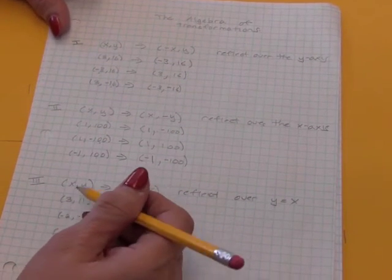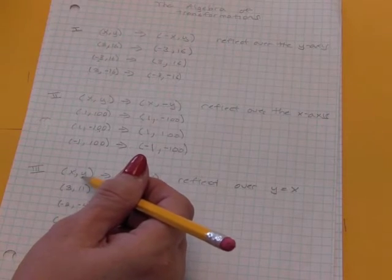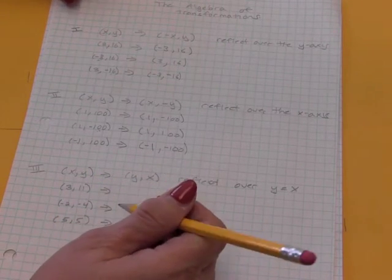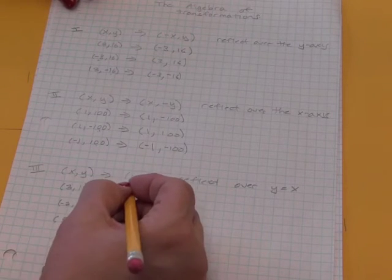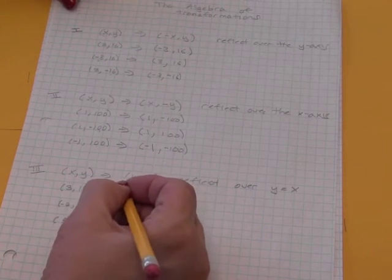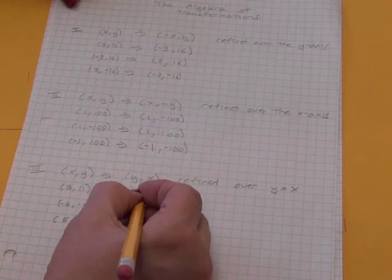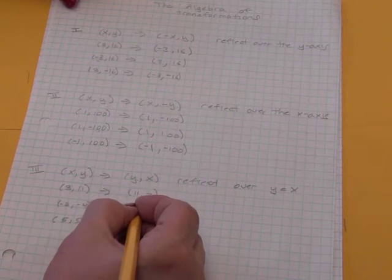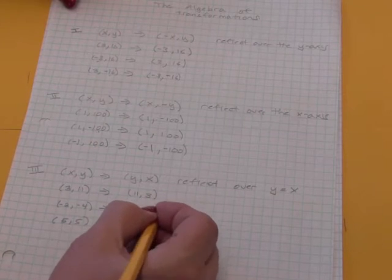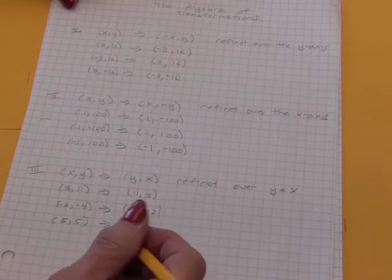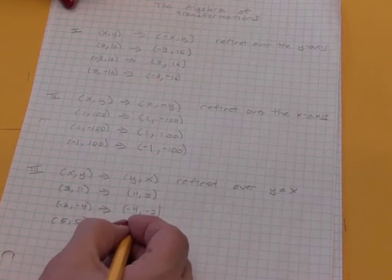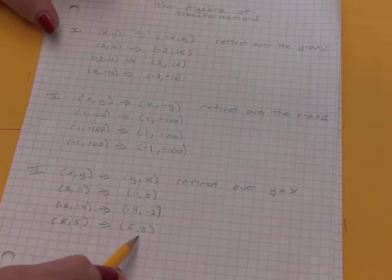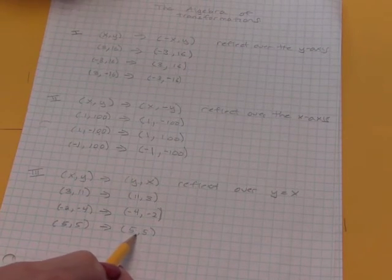The rule that takes us in a reflection over the line y equals x simply switches the x and y values, and it doesn't matter who's positive and who's negative. 3, 11 goes to 11, 3. Negative 2, negative 4 goes to negative 4, negative 2. We don't care if they're positive or negative. And if they're both the same, switching them doesn't do a thing. Remember, in these reflections, if you're on the line of reflection, you don't move.